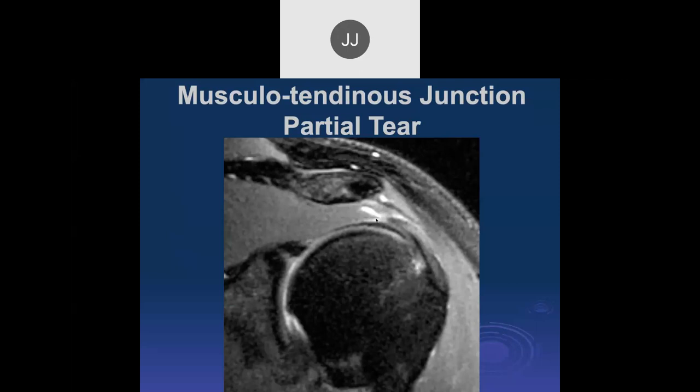That's an intramuscular tear — right in the distal end of the muscle, right next to the musculotendinous junction. These aren't common in the shoulder, but they can be seen in athletes. Usually the muscle tear is a little bit more proximal than that. As you know, most of the tears we see involve the tendon.